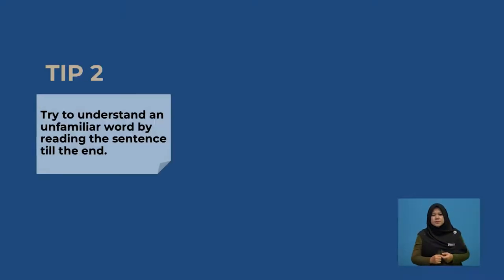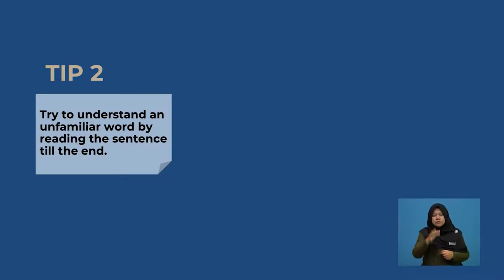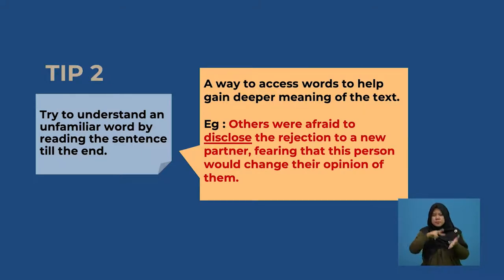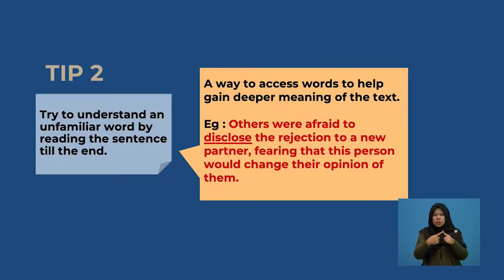The second tip recommends that you try to understand an unfamiliar word by reading the sentence till the end — it will eventually give you an idea. This is a great way to access words to help gain deeper meaning of the text. For example: 'Others were afraid to disclose the rejection to a new partner, fearing that this person would change their opinion of them.'